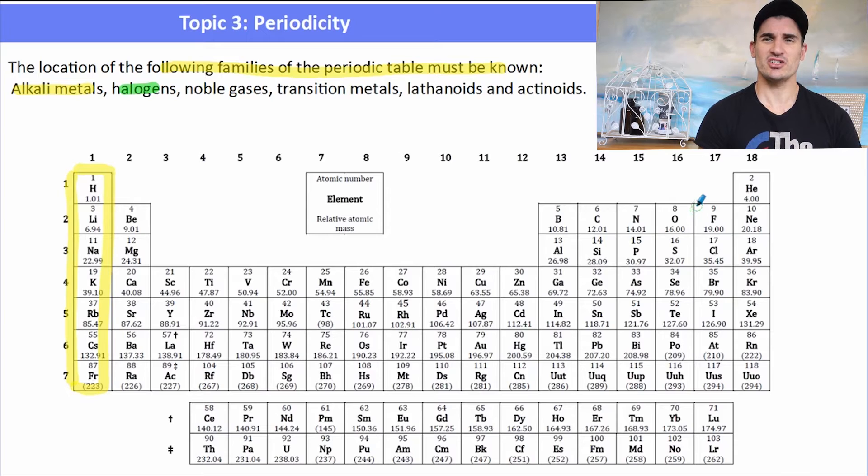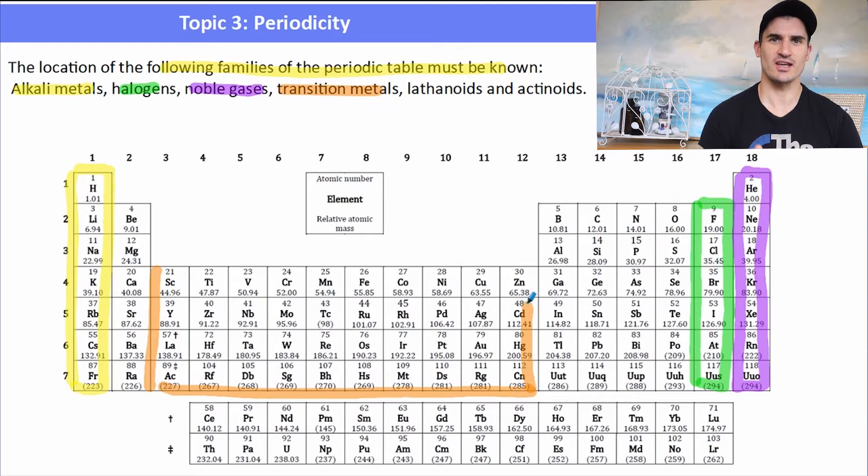Halogens - the halogens are group 17 of the periodic table. The noble gases - the noble gases are group 18 of the periodic table, noble because they have a full outer shell. The transition metals - well, that's the big block of elements from group 3 to group 12. Those are the transition metal elements, and they have a differing oxidation state, which we touch on in the redox topic, topic 9.